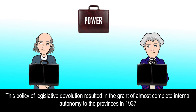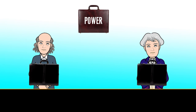This policy of legislative devolution resulted in the grant of almost complete internal autonomy to the provinces in 1937. The power that the Regulating Act of 1773 and Charter Act of 1833 had centralized was now decentralized and given to the Bombay and Madras presidencies, meaning the provinces could take their own decisions.